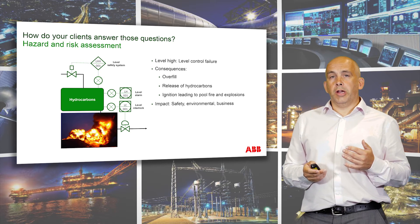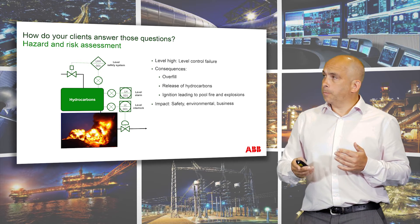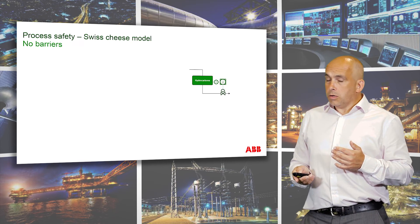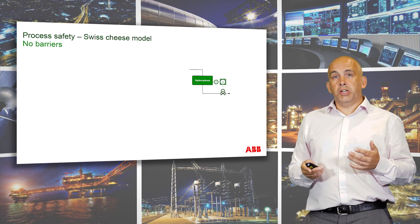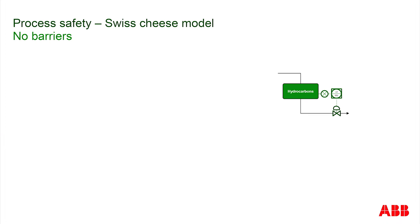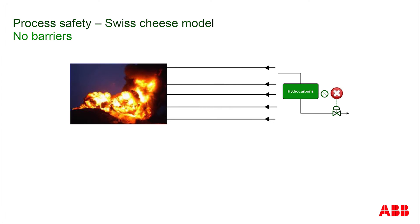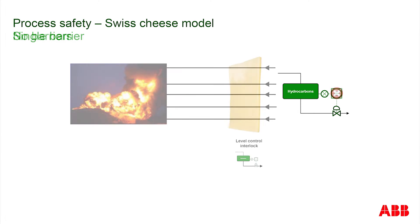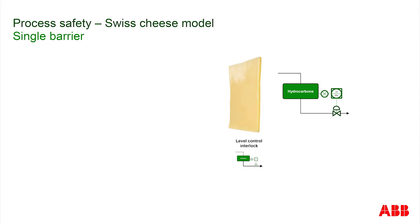So what goes wrong in operations? To explain this, we're going to use the Swiss cheese model. If we think about it, if we didn't have any barriers and we had that failure on the level controller, it will lead to the events. We don't want that to happen. So we put in place a barrier. In this model, we're calling that barrier a slice of cheese.